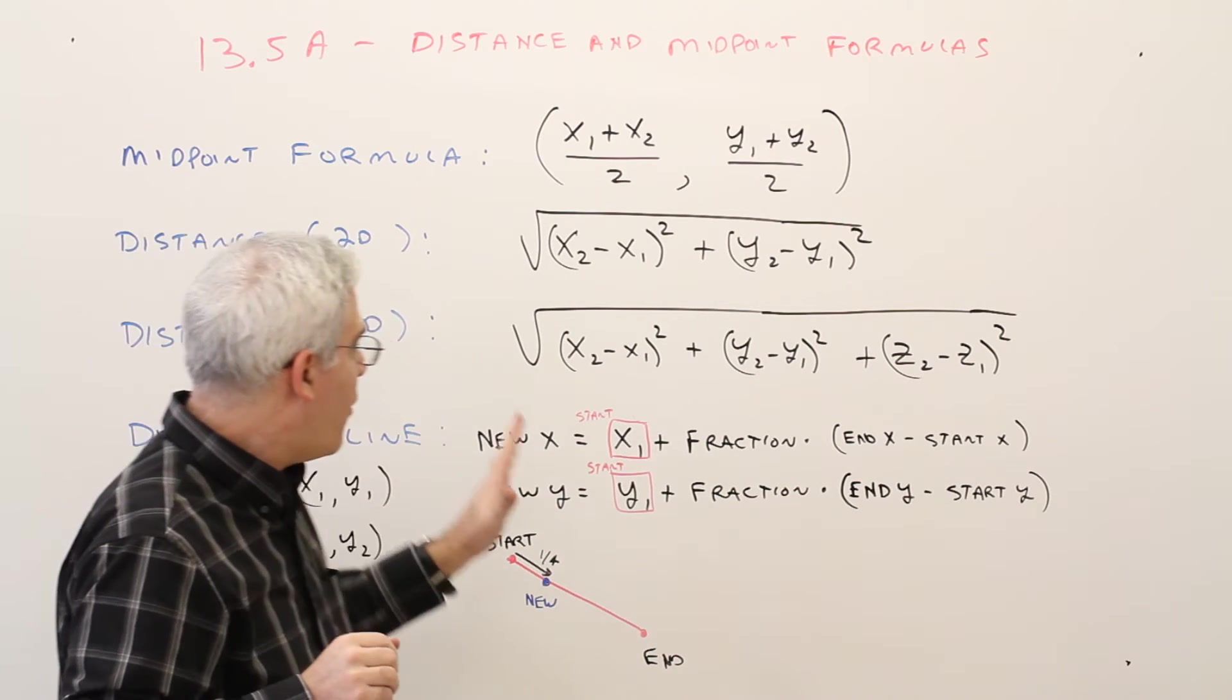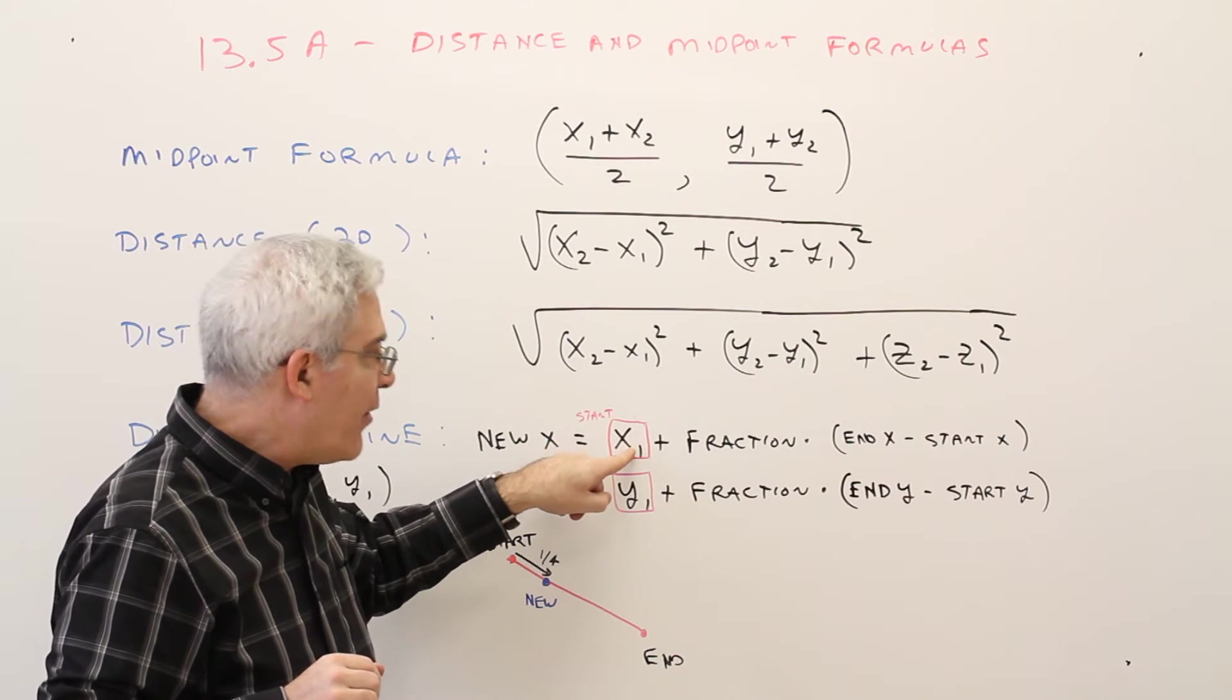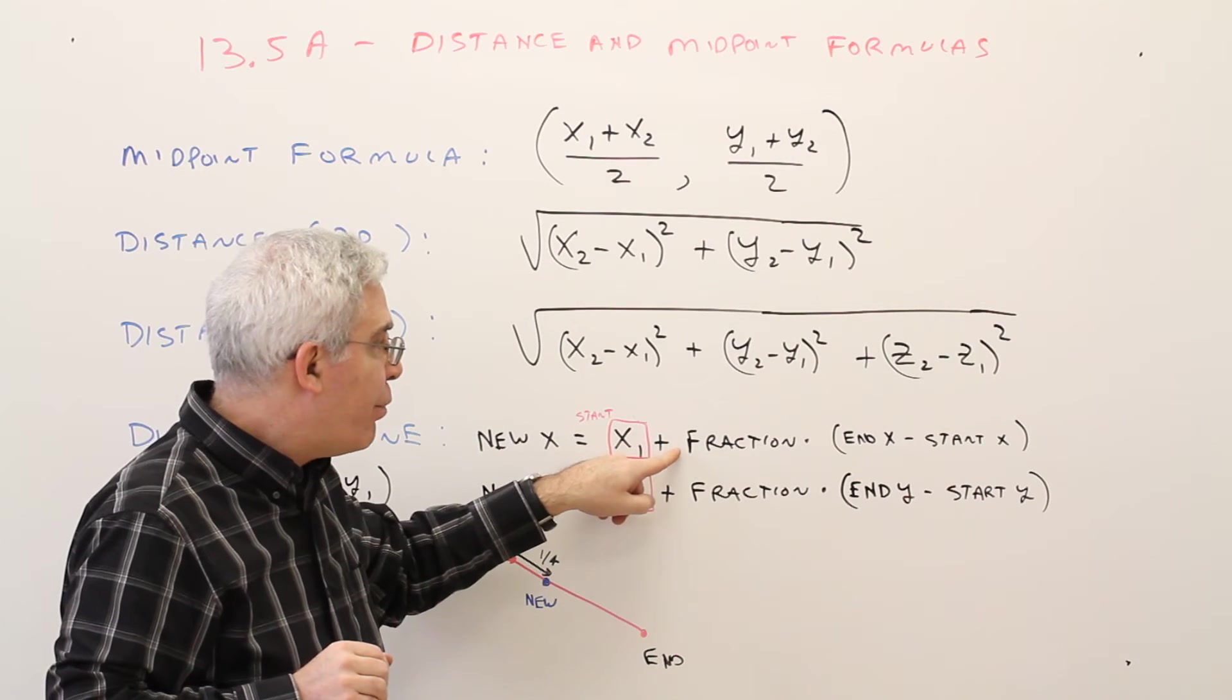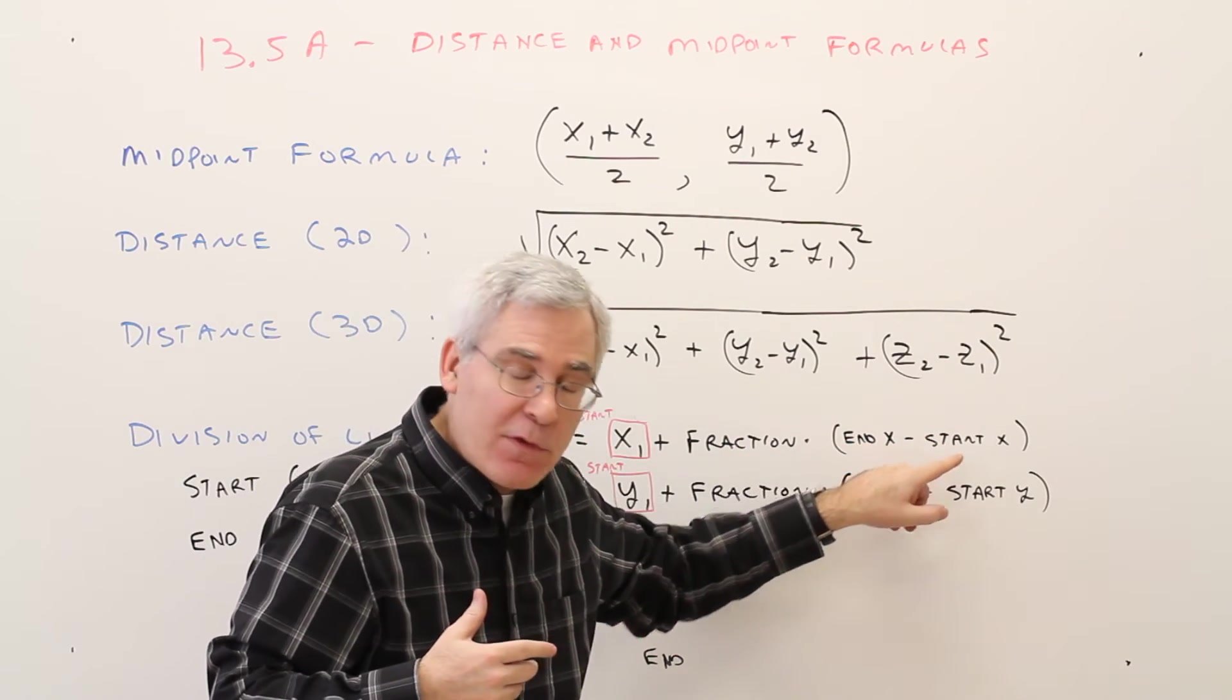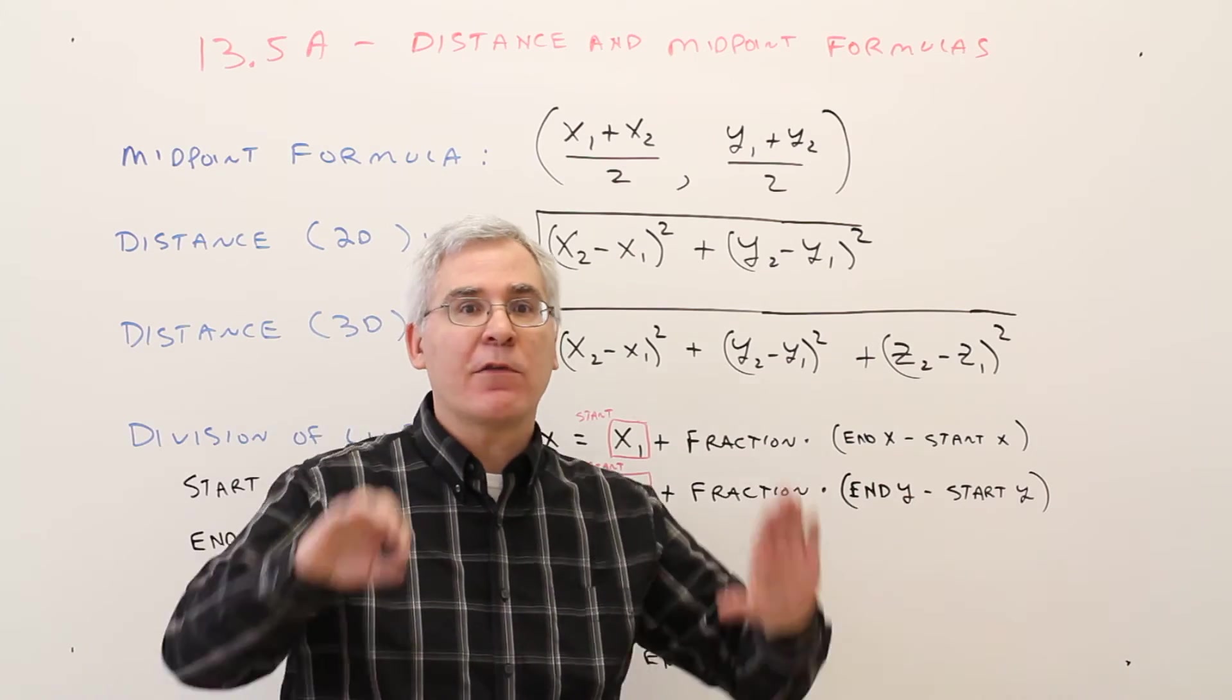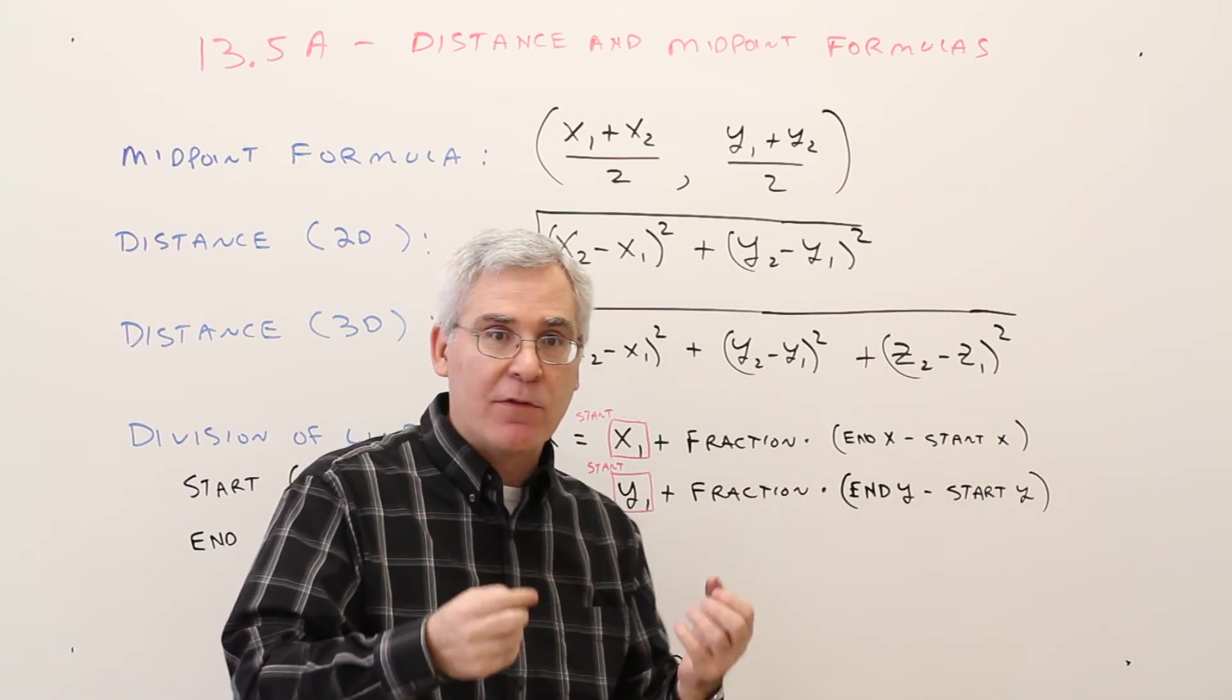So the formula is the new x-coordinate will be the starting x-coordinate plus the fractional amount times the ending x minus the starting x. Always, always, end minus start. That'll keep your signs straight.